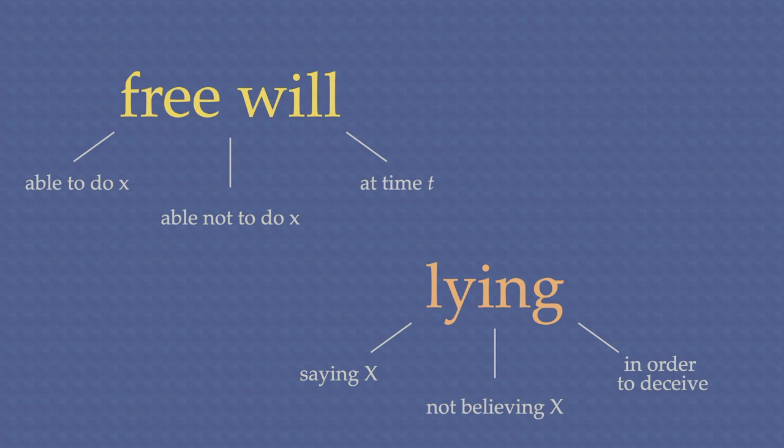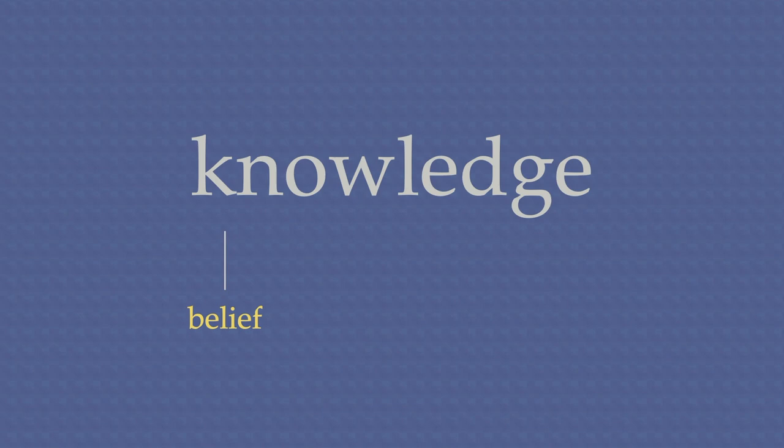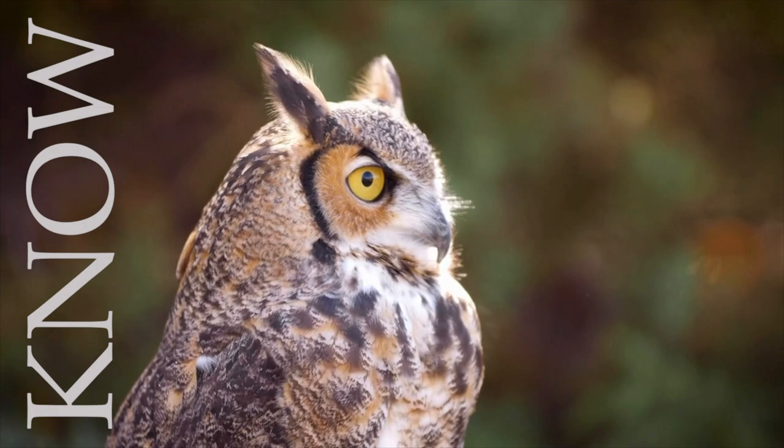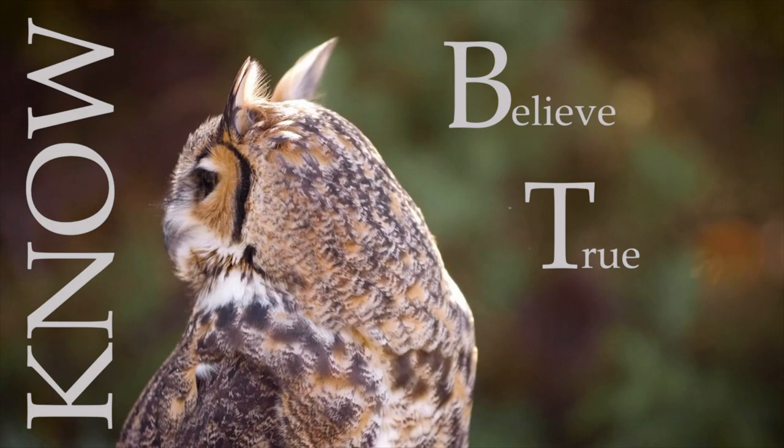So, what about the analysis of knowledge? Well, since the time of Plato, knowledge has traditionally been broken down into belief, truth, and justification. In other words, to know this is a great-horned owl is to believe it's a great-horned owl, when it's in fact true that it's a great-horned owl, and you're justified in believing it's a great-horned owl.